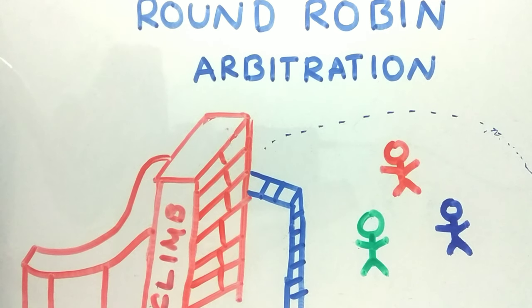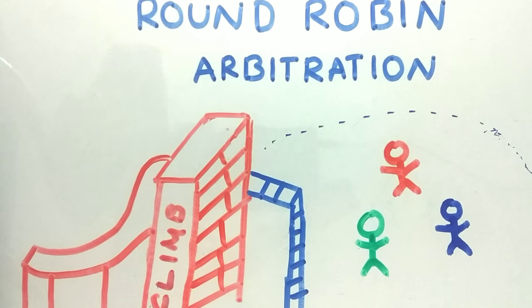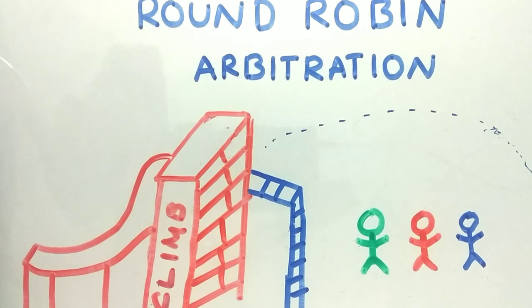Hi guys, welcome back to another interesting topic. Today's topic is on round-robin arbitration. In round-robin arbitration, all the agents or the sources have equal priority to access the common resources. But since we have equal priority, we need to grant each of them the resources in turns. So let us understand round-robin arbitration through a small example.